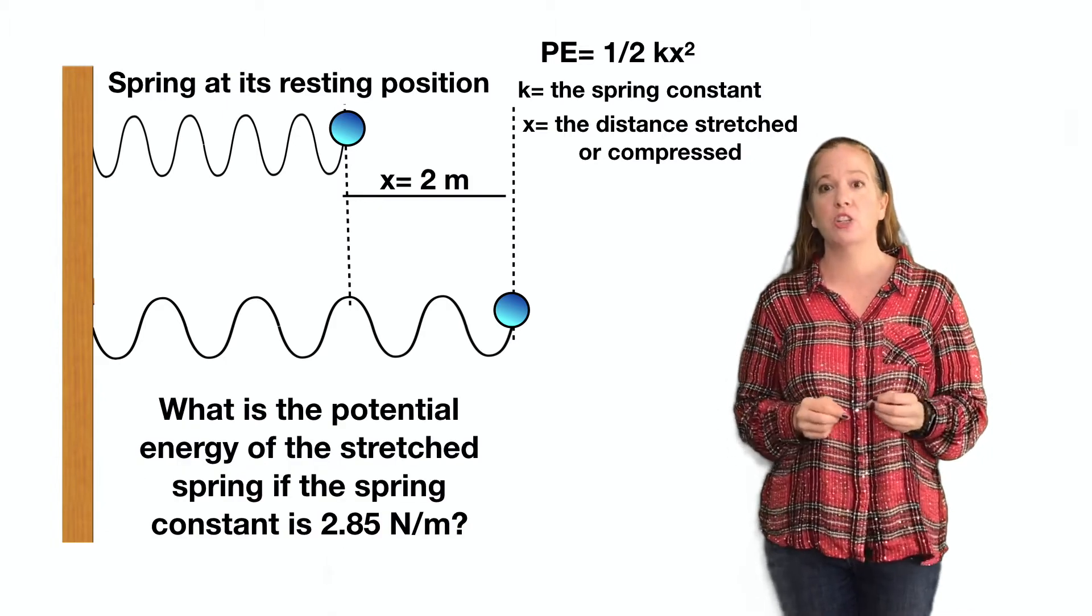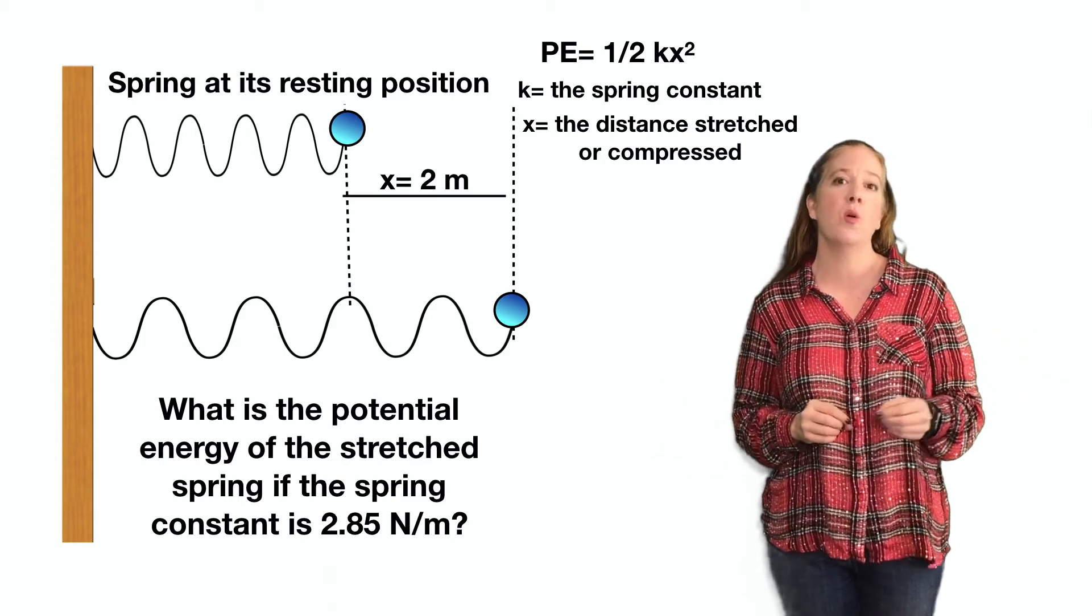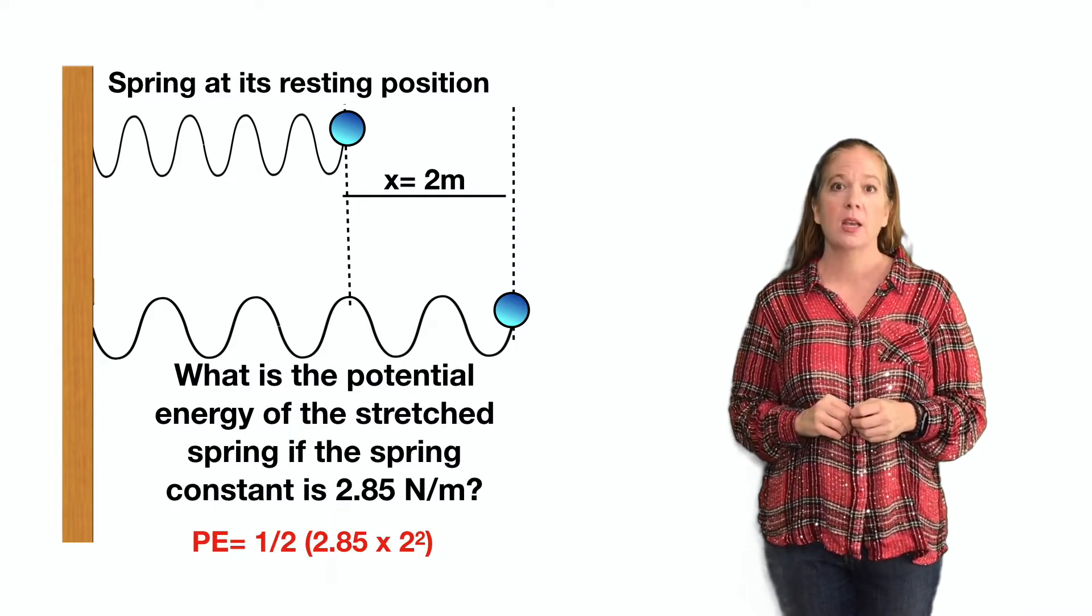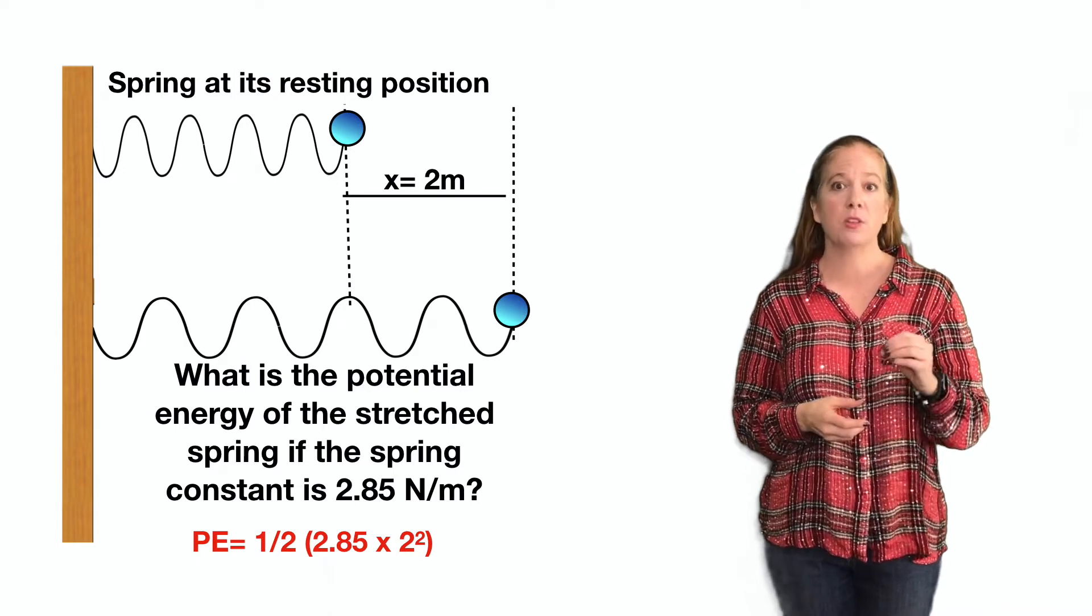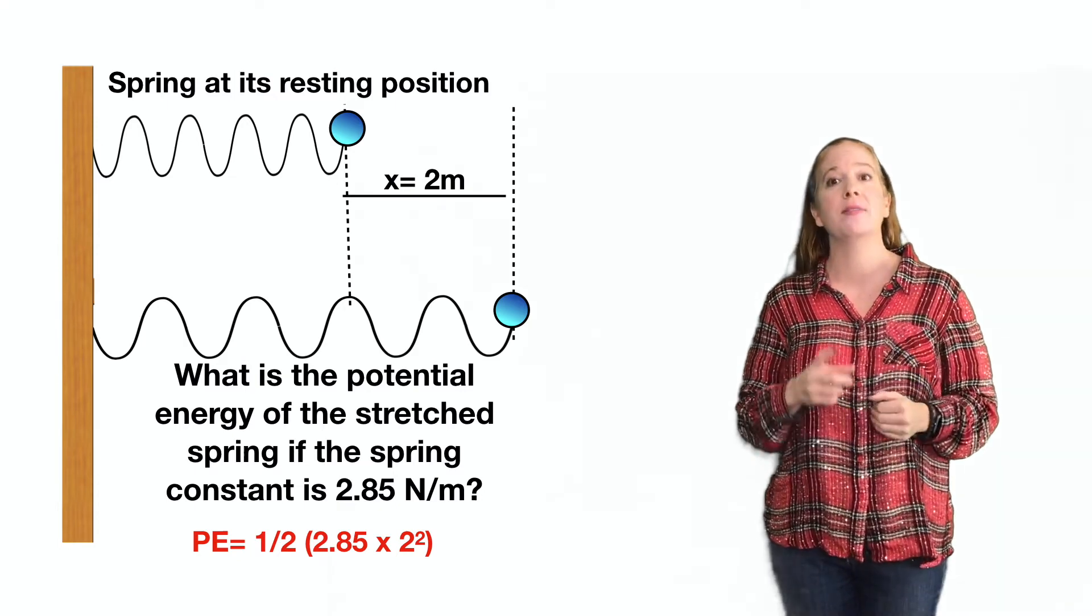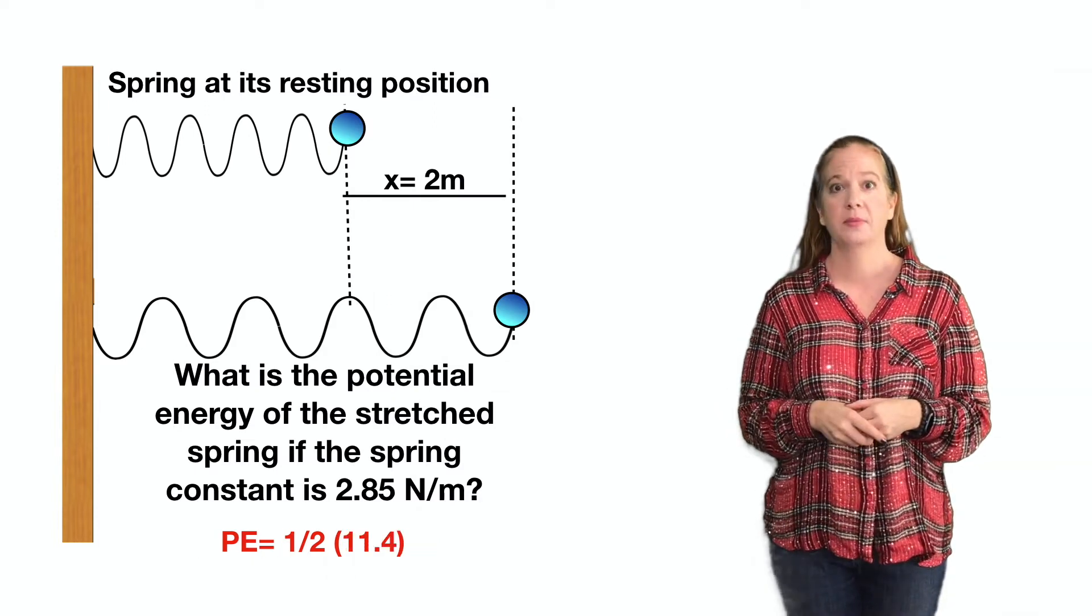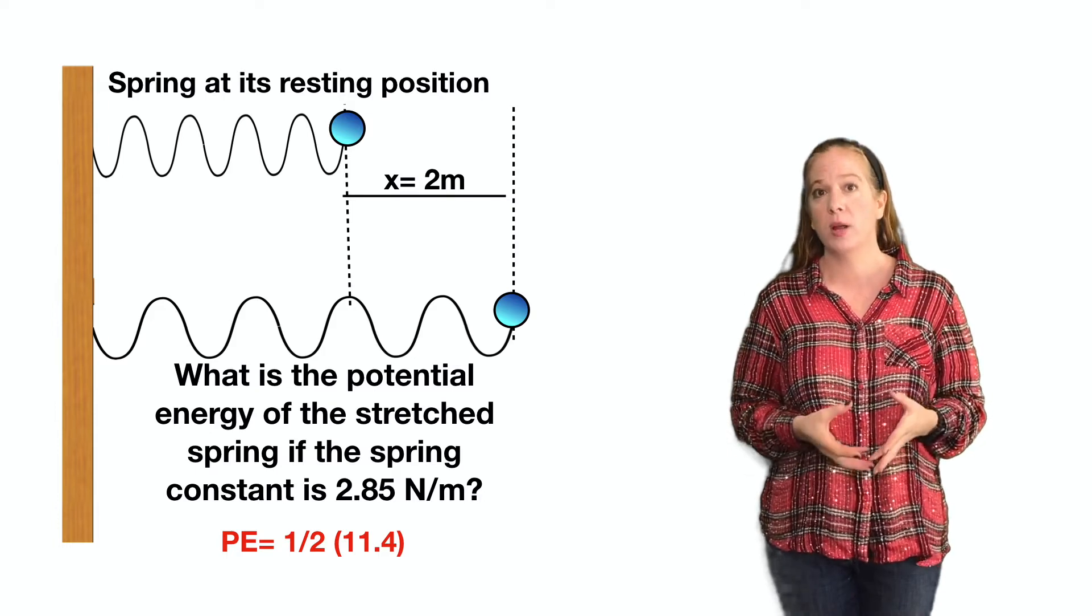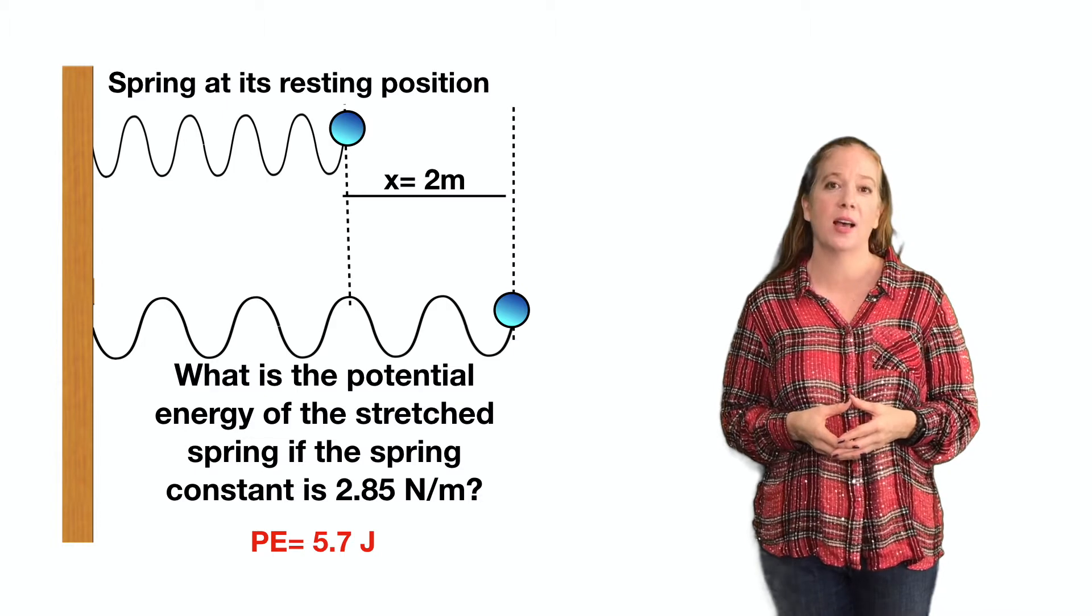So what is the potential energy of this stretched spring if the spring constant is 2.85 newtons per meter? We're going to take this and plug it into the formula so that PE equals 1 half times 2.85 times that x, which is 2, so 2 squared. And when we get that, it's 1 half times 11.4 and that gives us a potential energy of 5.7 joules.